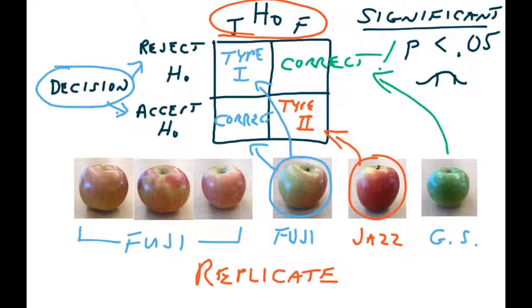If the null hypothesis were true, any finding that would occur fewer than 5% of the time we decide is pretty rare, and we're on better footing rejecting the null under those circumstances. We can calculate the probability of obtaining a given finding, and if that probability is very rare — not likely to have occurred by chance — we have more confidence the null hypothesis is false. Is it possible to get an all-green apple from a Fuji tree? Sure, it's possible — there might be a genetic mutation — but it's just not likely to happen very often. That's what we mean by significant: the difference is so rare that if we were drawing from the same population, it would happen fewer than 5 times out of 100.